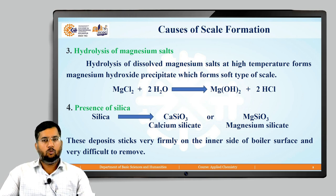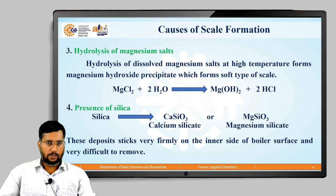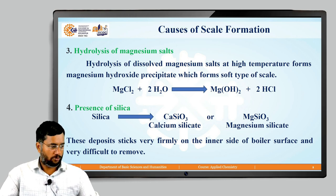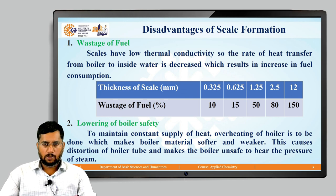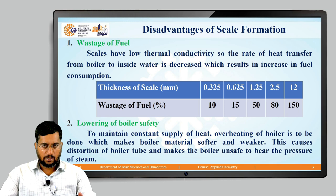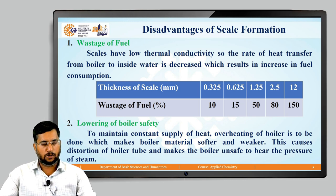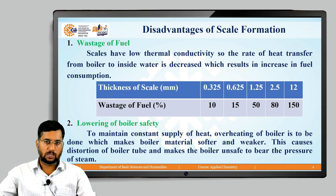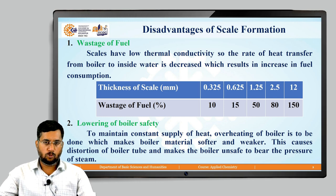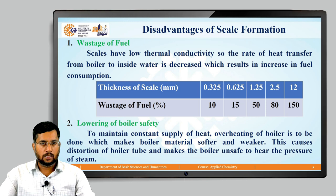This means that before feeding water to the boiler, pretreatment is required to remove dissolved impurities and avoid scale formation. Scale, like sludge, is a poor conductor of heat with low thermal conductivity. The rate of heat transfer from the boiler to the water decreases, resulting in increased fuel consumption. Extra heat must be provided to maintain the steaming rate, and whatever heat is applied does not pass efficiently through the scale to the water, leading to wastage of fuel.